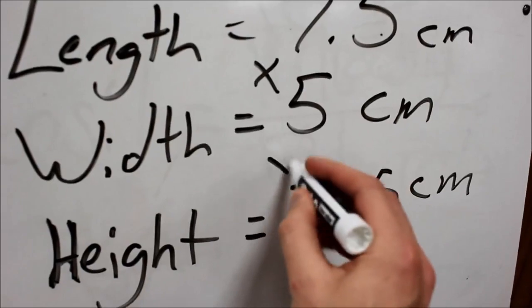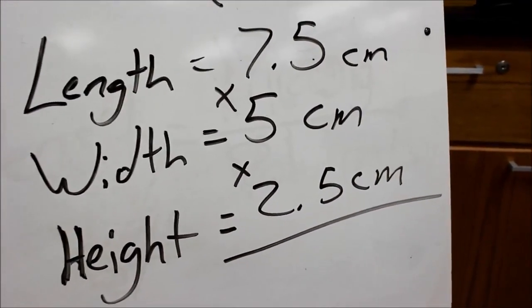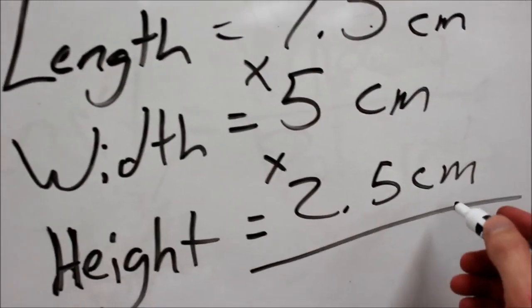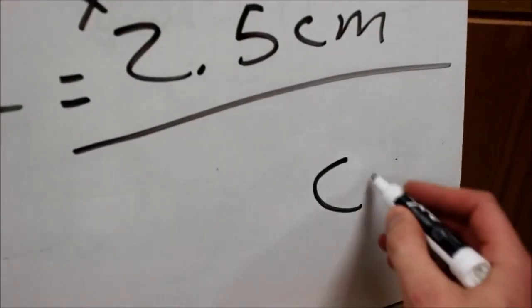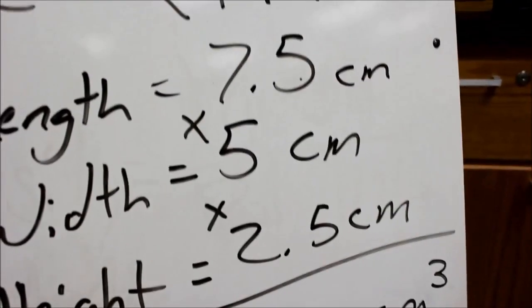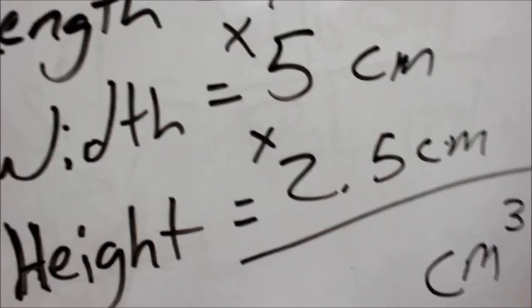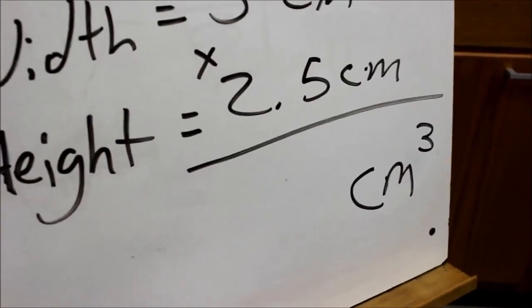So multiply, and I get my volume. But I need to make sure I have the correct unit. The end unit would be centimeter cubed, because I'm multiplying 1, 2, 3 centimeters. So cubic centimeters.